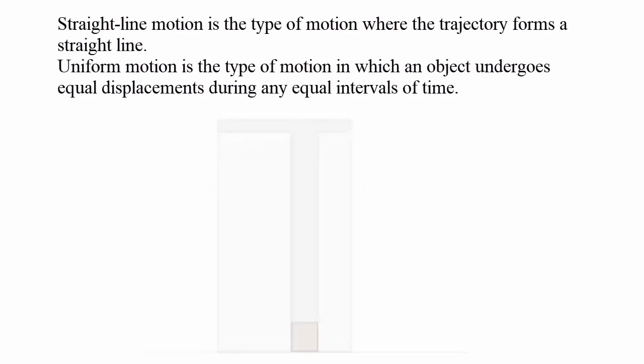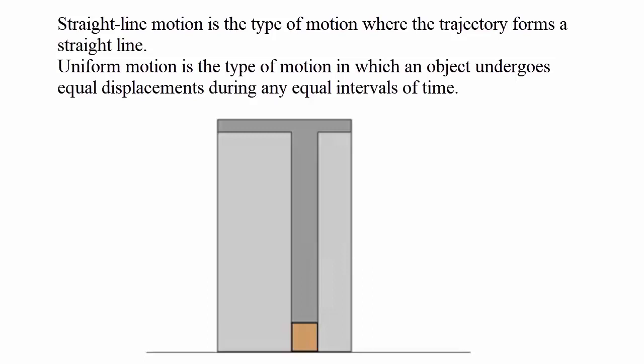Straight Line Motion. Motion is called rectilinear when the trajectory is a straight line.